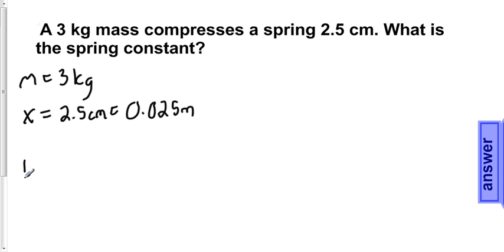We are asked to use the given information above to solve for spring constant k, and in order to do this, we need to use Hooke's Law, which states that the force that is used to compress a spring f is equal to the spring constant k multiplied by the distance the spring is compressed in meters, x.